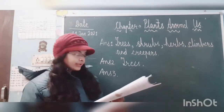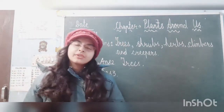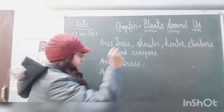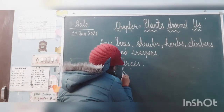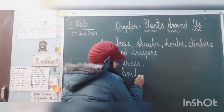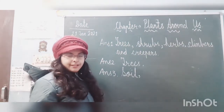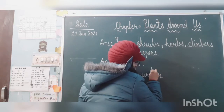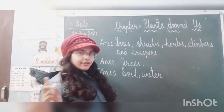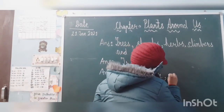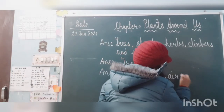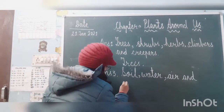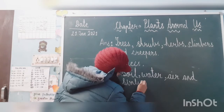Question number 3: what do plants need to grow? First of all, they need soil. Then, what do we give them so they can grow? Water. They also need carbon dioxide — so air. And one more thing is sunlight. The last one is sunlight.